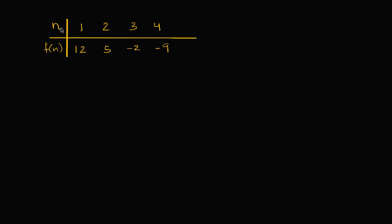We see here in this table that for given n's: when n is one, f(n) is 12; when n is two, f(n) is five; when n is three, f(n) is negative two; when n is four, f(n) is negative nine. One way to think about it is this function f is defining a sequence where the first term is 12, the second term is five, the third term is negative two, the fourth term is negative nine, and it goes on and on.